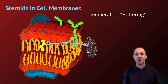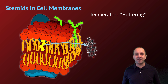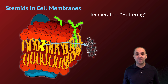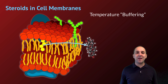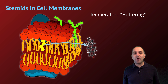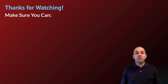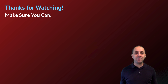Steroids also serve as a temperature buffer in the cell membrane. Cholesterol is incorporated directly into the bilayer and acts like molecular bumper cars. If the membrane gets too hot and phospholipids move too much, cholesterol gets in the way and slows them down. If things get too cold and the membrane starts to solidify, cholesterol also gets in the way and prevents the fatty acid tails from forming a stable crystal lattice — thus moderating both extremes.